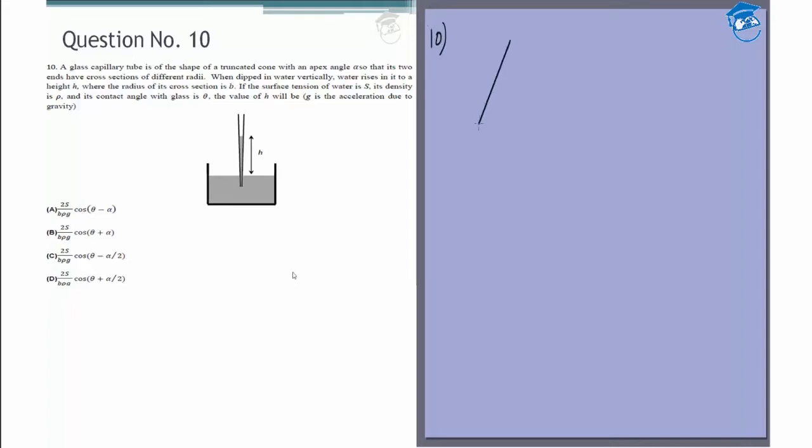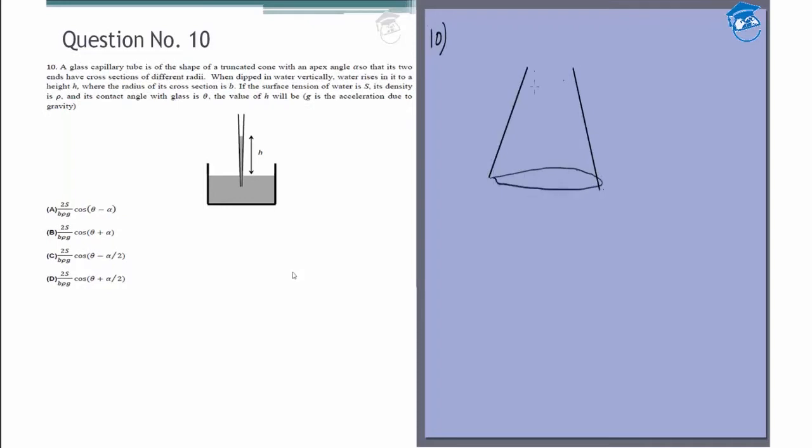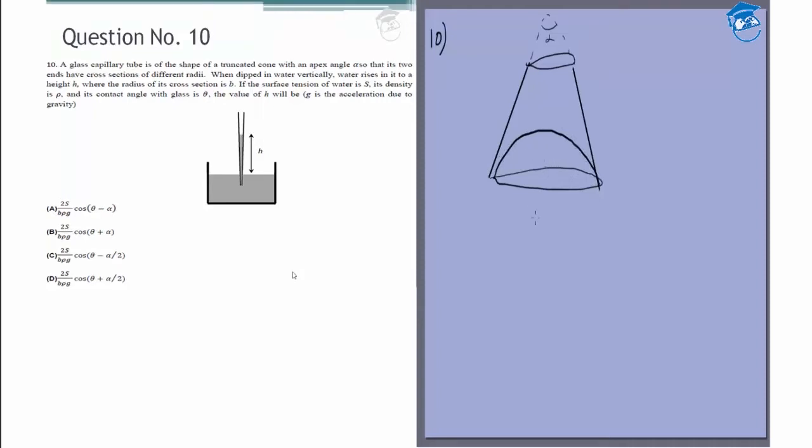So it's something like this - a glass capillary instead of the standard test tube shape. When extended, this makes an angle alpha; its apex angle is alpha. It is put inside water and you have some water rising, and the contact angle is theta.